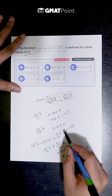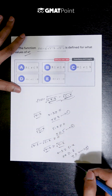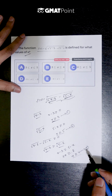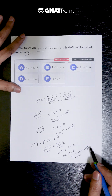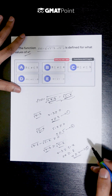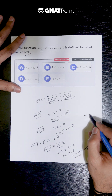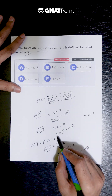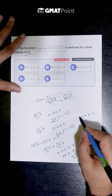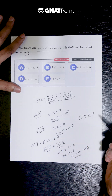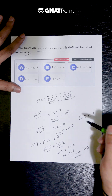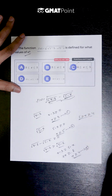Now we need to pick out the values of x that satisfy all three conditions. The first condition gives x greater than or equal to 3, and the third condition gives x greater than or equal to 4, which is the stricter bound. Combined with x less than or equal to 5, the domain of the function is x greater than or equal to 4 and less than or equal to 5. So the correct answer is option C.